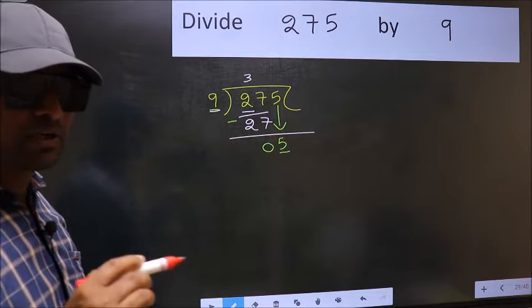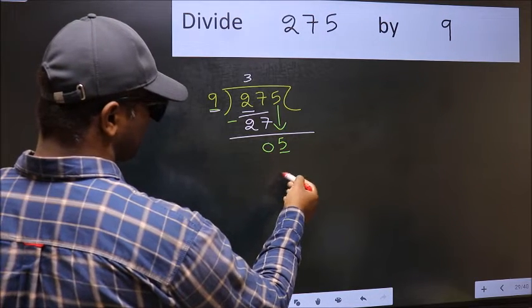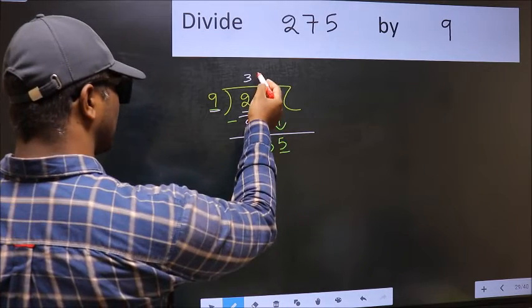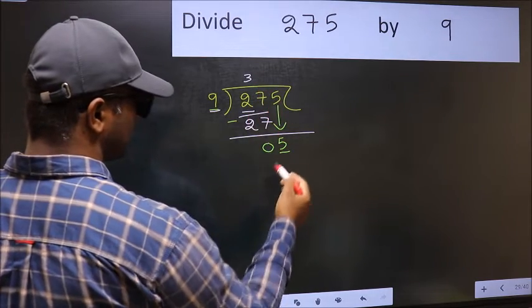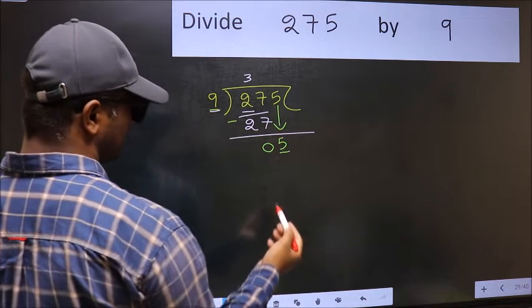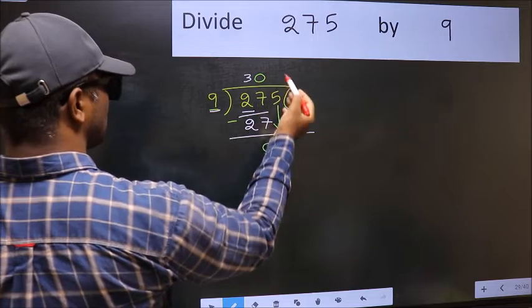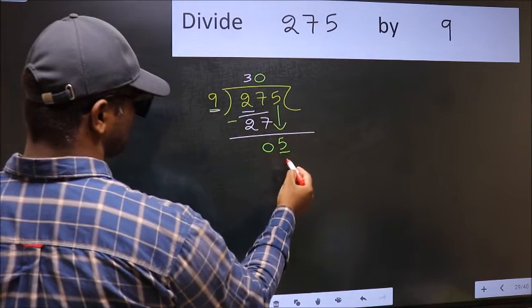Instead, what you should think of doing is, which number should we take here? If I take 1, we will get 9. But 9 is larger than 5. So what we should do is, we should take 0. So 9 into 0, 0.